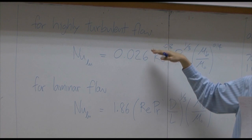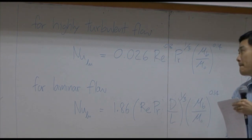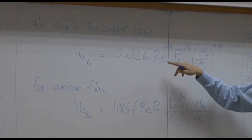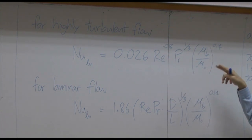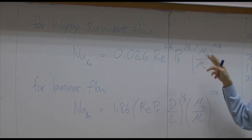For highly turbulent flow, as you can see, it is a function of Reynolds number, Prandtl number, and viscosity difference. But in this equation, Brinkman number is neglected because normally we rarely consider Brinkman number.